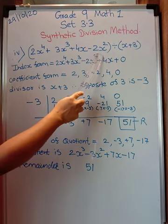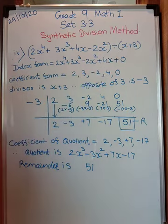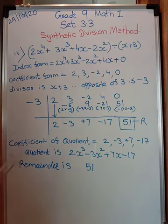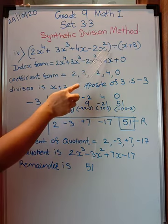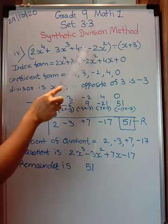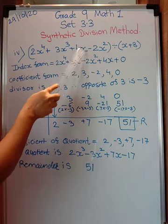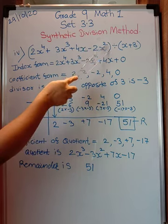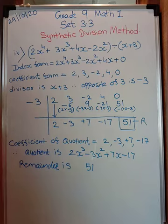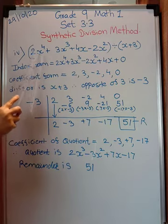This is the polynomial given — this is the dividend and this is the divisor. Now the first step is to write it in index form. Look here, they have given it anyhow: the square term is given last, the x raised to 1 term is given earlier, and the constant term is missing. That is why the first thing you should do is write it in index form.